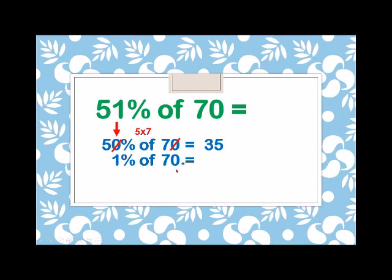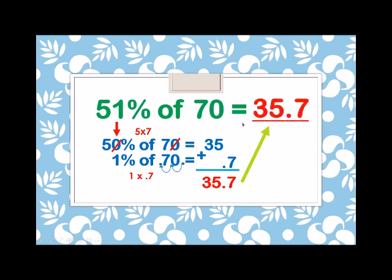And then, moving the decimal point of 70 from right to left two places. So, 1, 2, so we have 0.7. So, 1 times 0.7 is equals to 0.7. Adding these numbers, we have 35.7. Therefore, 51% of 70 is equals to 35.7. Easy.